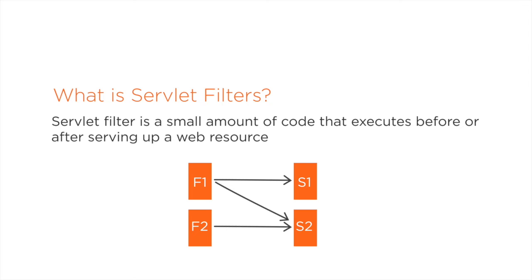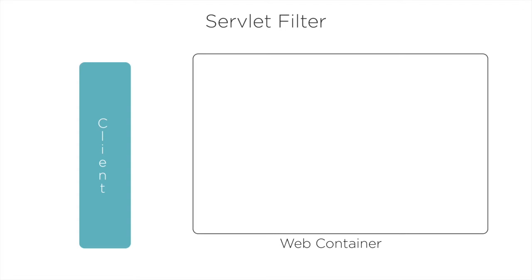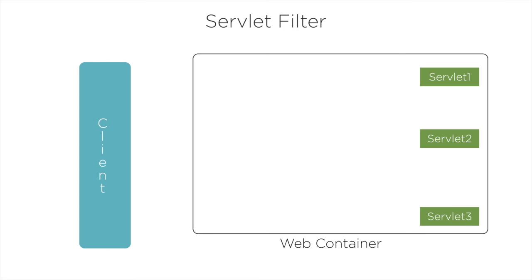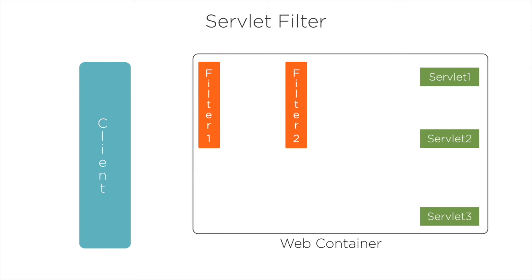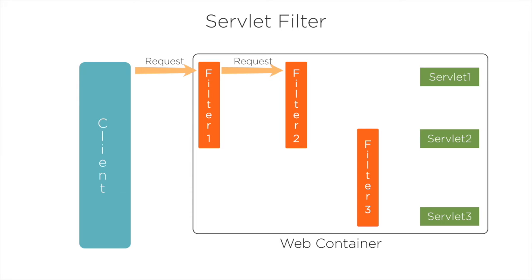Whenever a request is given, it will be sent to the servlet filter where the code for preprocessing the request is written, and then submitted to the servlet. For example, assume we have three servlets — Servlet 1, Servlet 2, and Servlet 3 — and three filters — Filter 1, Filter 2, and Filter 3. Servlet 1 is mapped with Filter 1 and Filter 2. Whenever the client sends a request to Servlet 1, the request is first passed to Filter 1, then to Filter 2.